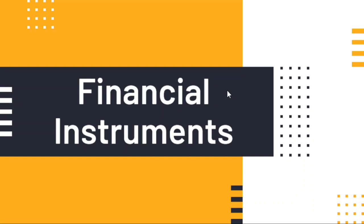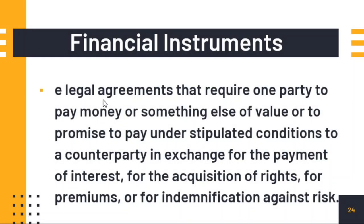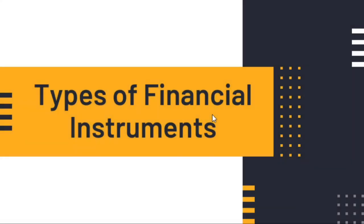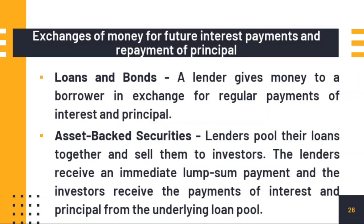Now let's proceed to financial instruments. These are legal agreements that require one party to pay money or something of value under stipulated conditions. A counterparty in exchange for the payment receives interest, capital gains, premiums, or indemnification for a loss event. Examples include checks and stocks. The first type is loans and bonds — a lender gives money to the borrower in exchange for regular payments of interest and principal. For example, if the agreed interest is 20%, every month the borrower can reduce the principal or just pay the interest.